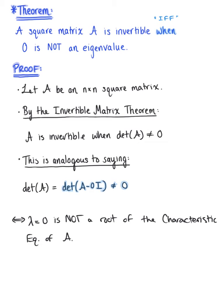Now if lambda equals 0 is not a root of the characteristic equation, then this logically implies or is logically equivalent to saying that lambda equals 0 is not an eigenvalue of matrix A.